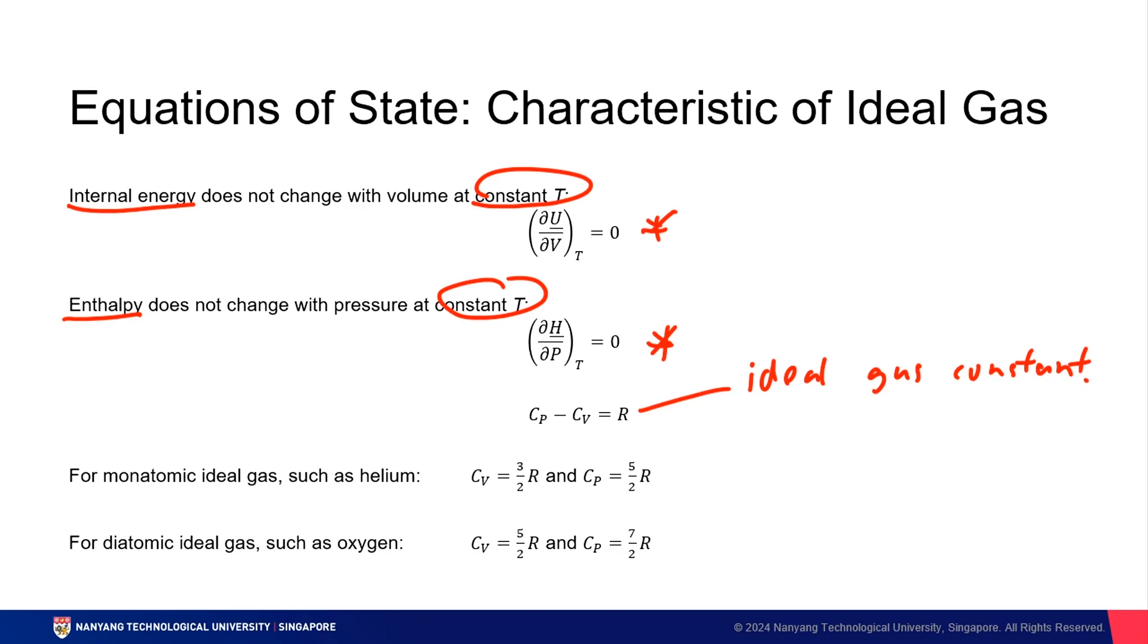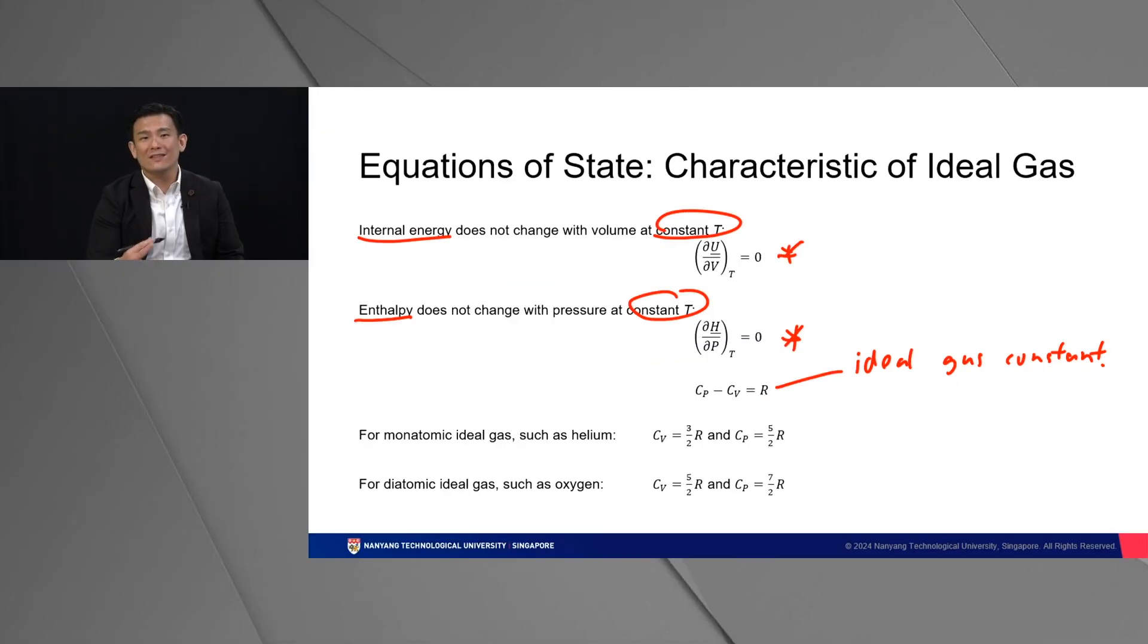Because in an open system, an ideal gas, so long as you apply some kind of heat to it, even if it's just sitting there, it tends to do work on its own, and hence the internal energy of Cp will always be larger than that of a closed system. Hence, Cp minus Cv is the ideal gas constant.